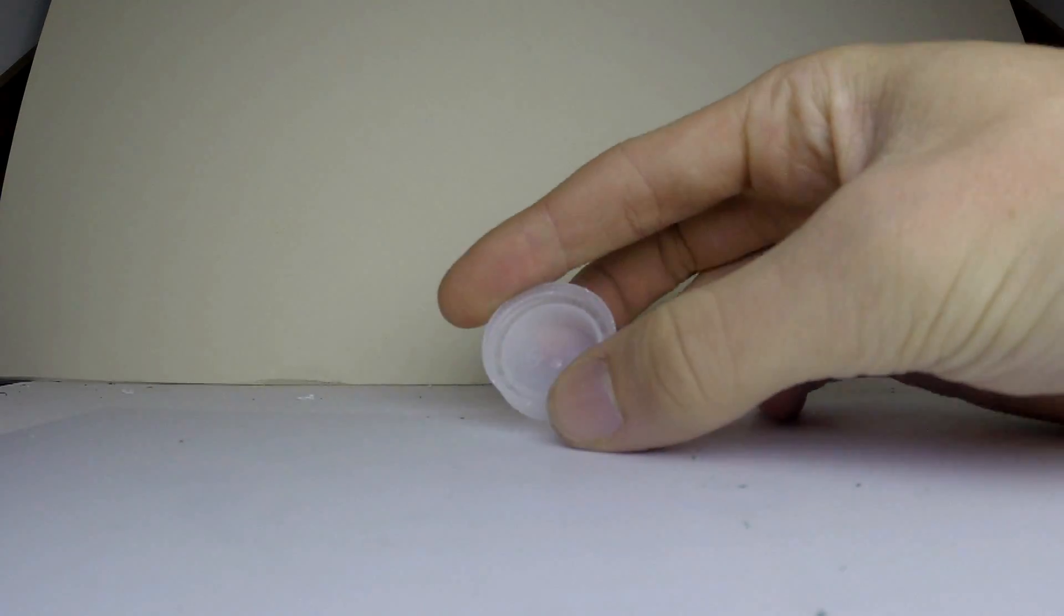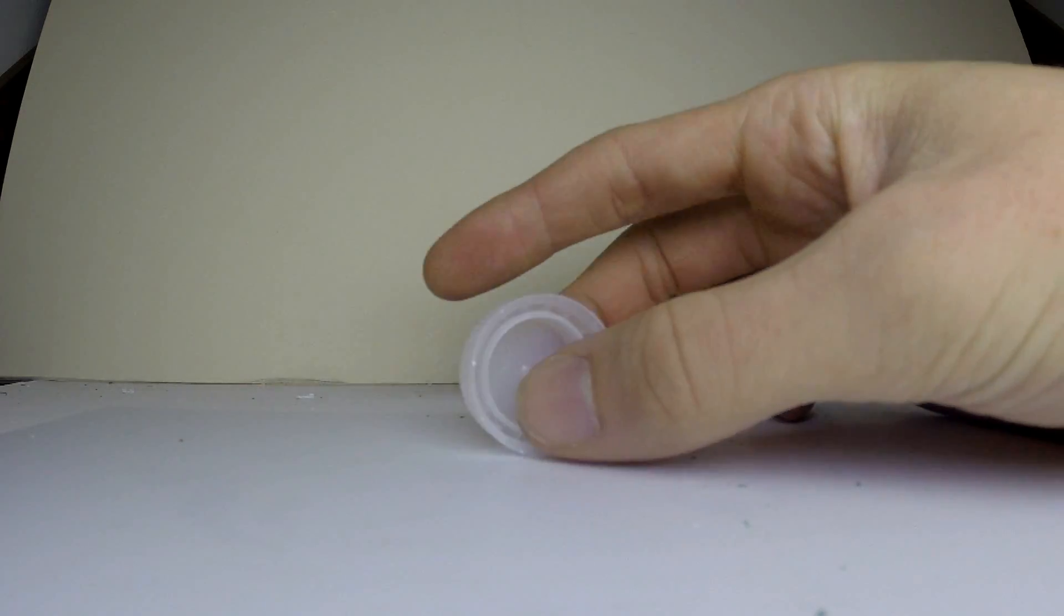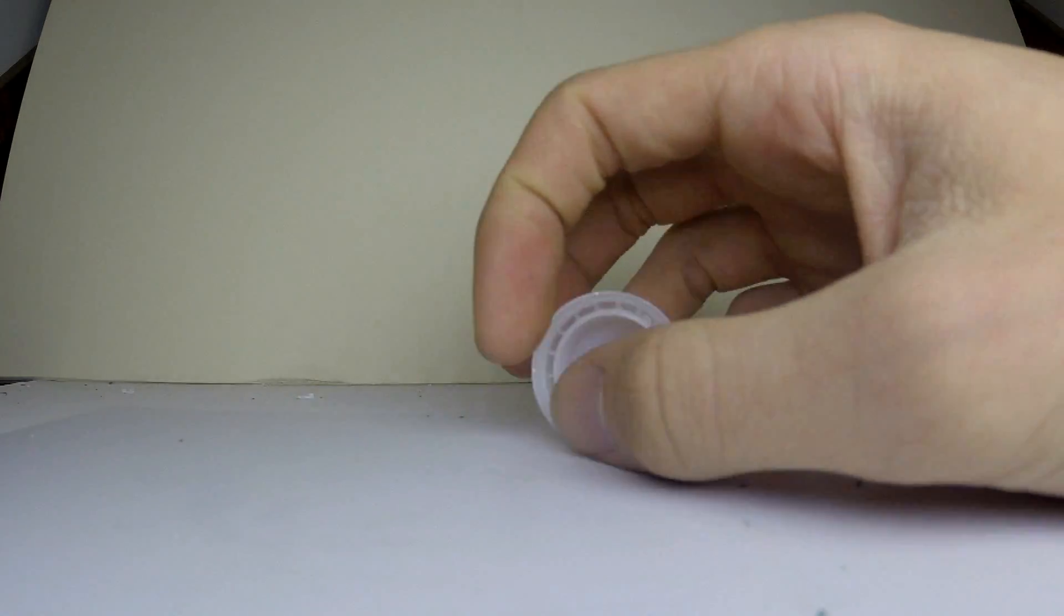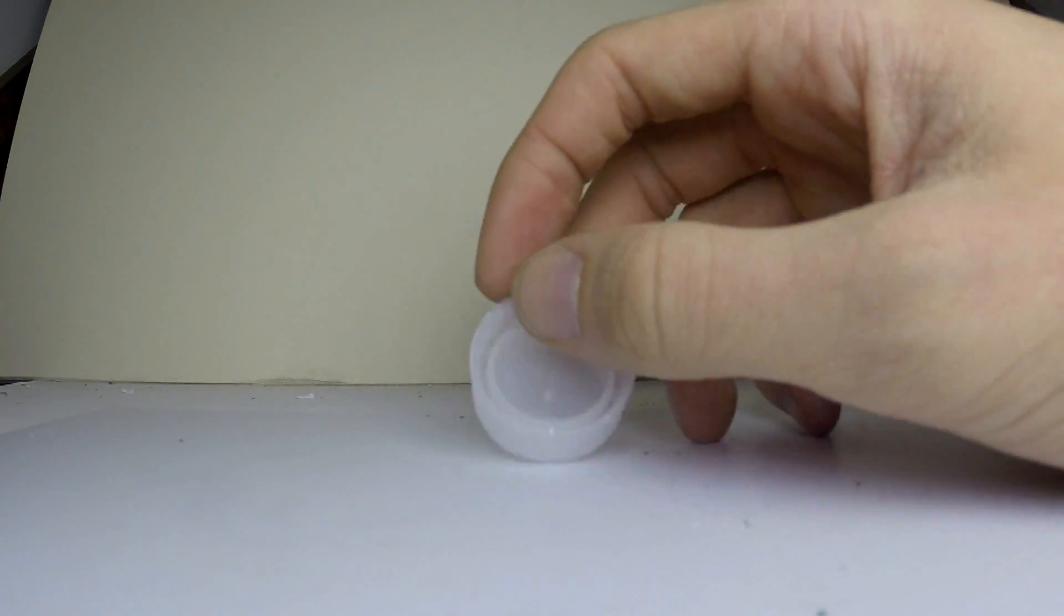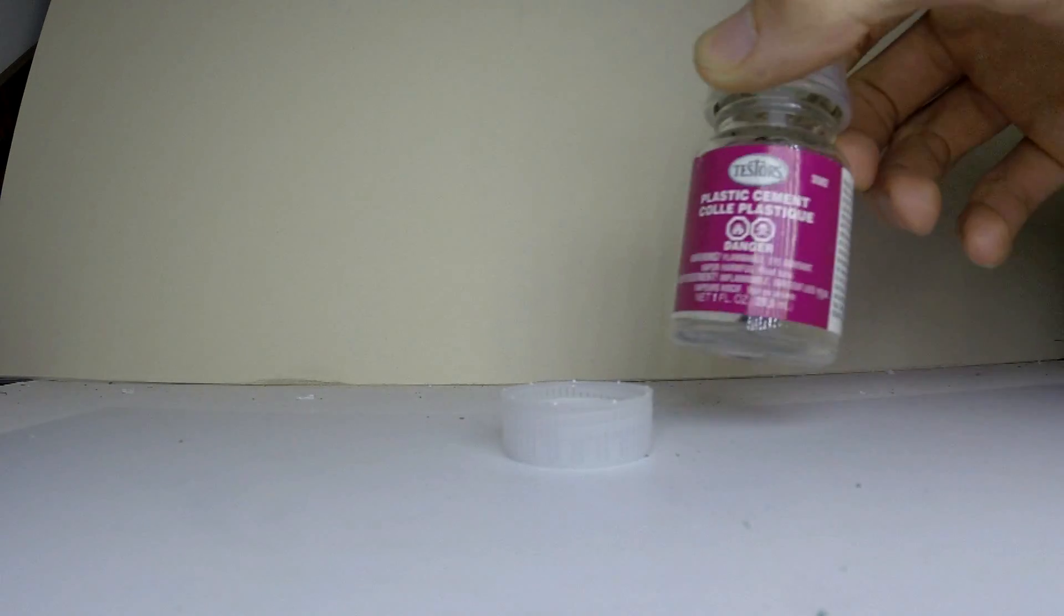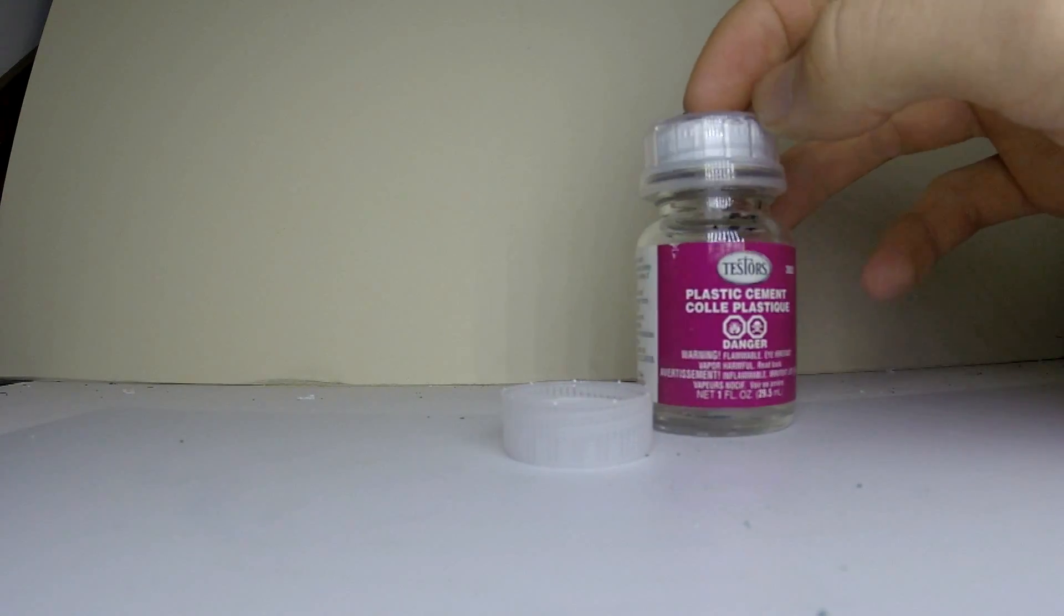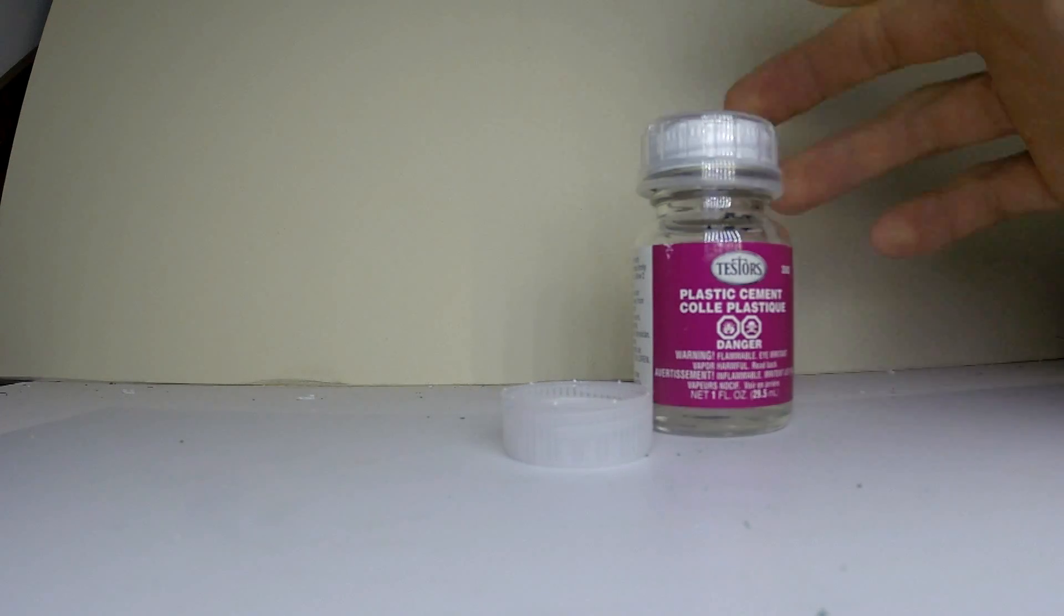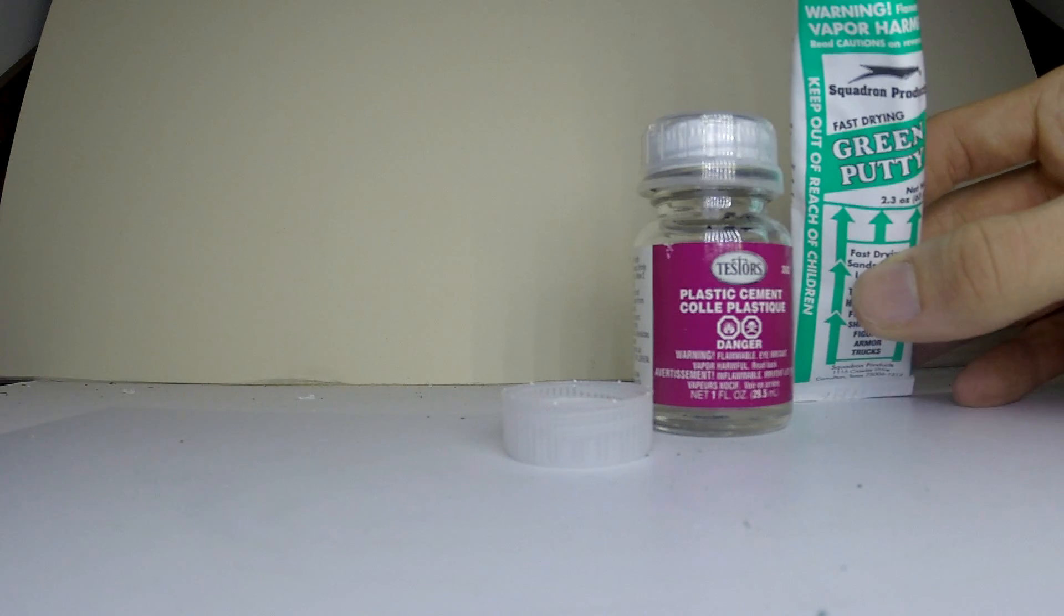To get things started for this project, you're going to need a chemical-proof container, preferably something like PET, nylon, or a plastic that will not be eaten away by model cement. So the item you need is model cement. I've just got this stuff here which I don't really like, so we'll use that, and also you're going to need some squadron putty.